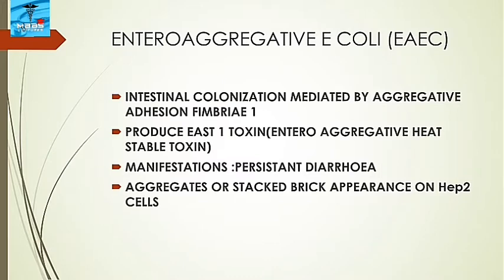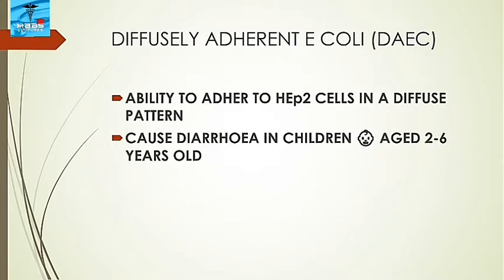Enteroaggregative E. coli (EAEC): intestinal colonization is mediated by aggregative adherence fimbriae 1 (AAF/1). It produces EAST-1 toxin (enteroaggregative heat-stable toxin). The manifestation is persistent diarrhea. It is so named because it adheres to human epithelial type 2 cells in a distinct stacked brick-like pattern.